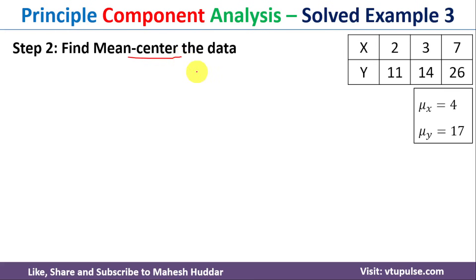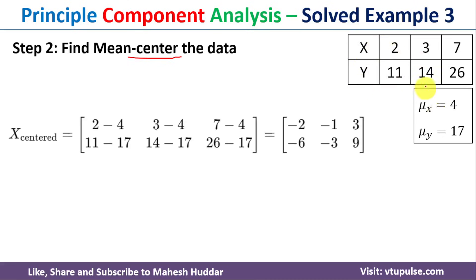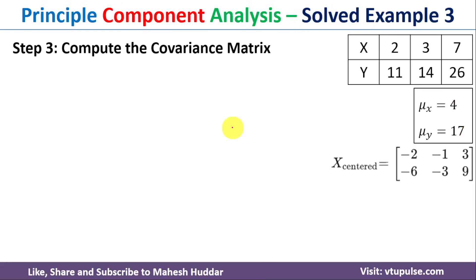Next we need to calculate the mean-centered data, which is done by subtracting the mean from each individual value: 2−4, 3−4, 7−4 for x, and 11−17, 14−17, 26−17 for y. After subtracting, we get x-centered values of −2, −1, 3 and y-centered values of −6, −3, 9.